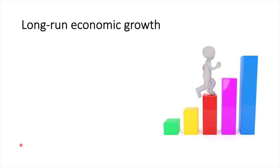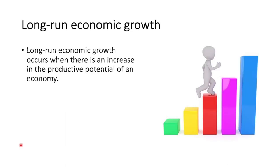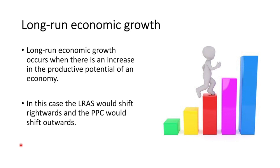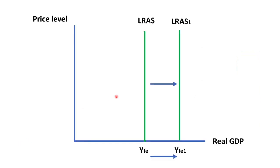Long-run economic growth occurs when there is an increase in the productive potential of an economy. In this case, the long-run aggregate supply curve would shift rightwards and the PPC would shift outwards. On the classical aggregate demand and aggregate supply diagram, it would be shown by a rightward shift of the long-run aggregate supply curve.